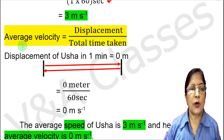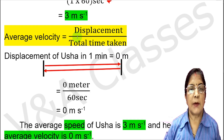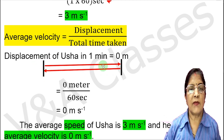The next step is average velocity. Average velocity equals displacement divided by total time taken. Now we check how much displacement there is. The initial position is at one end of the pool. Ursa swims to the other end and returns to the initial position, so the displacement is zero.